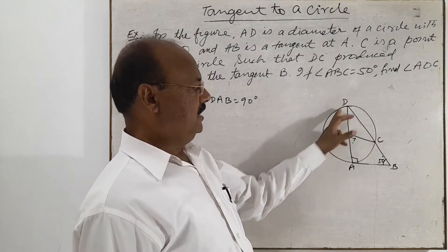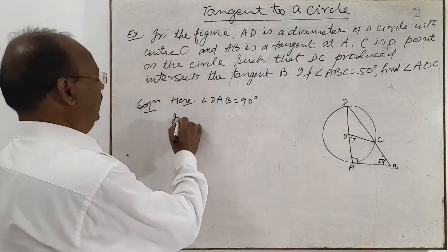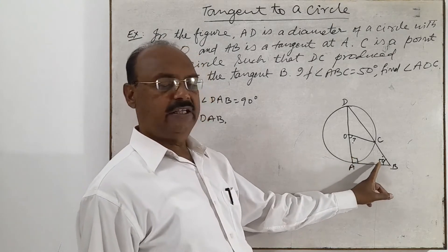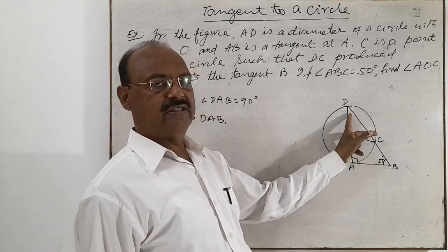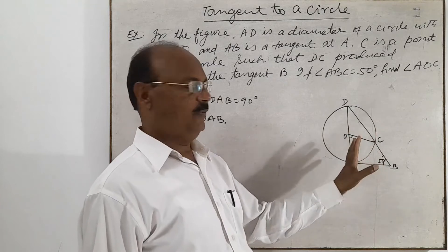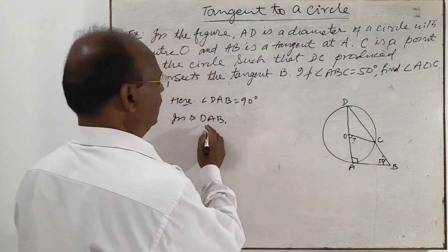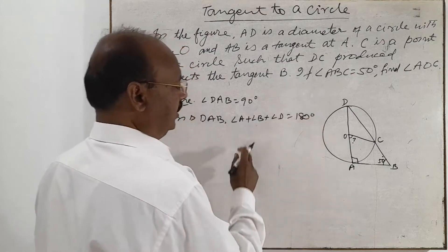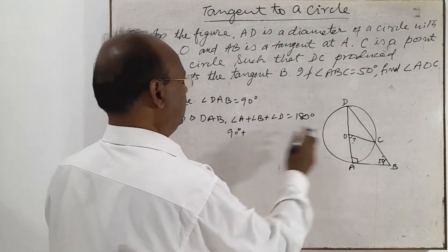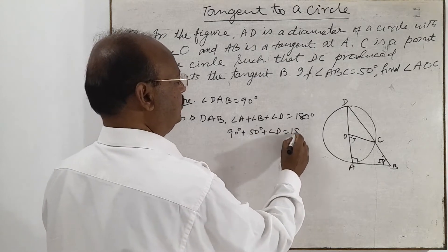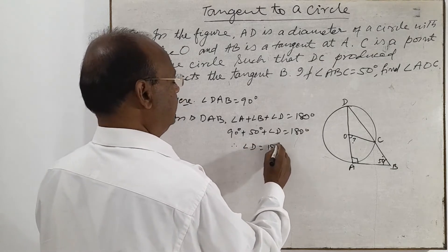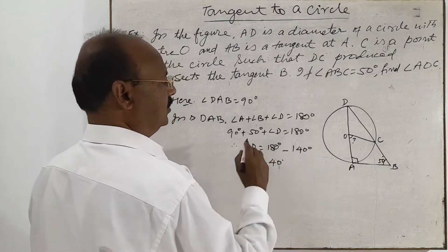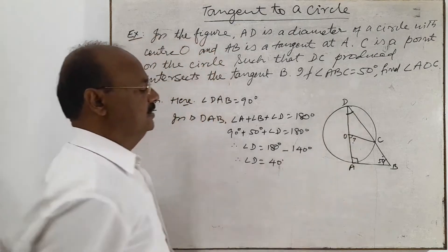Now in triangle DAB, we know the values of two angles: one angle is 90 degrees and another is 50 degrees. Since the sum of three angles is 180 degrees, angle A plus angle B plus angle D equals 180 degrees. So angle D equals 180 minus (90 + 50), which equals 180 minus 140, therefore angle D equals 40 degrees.